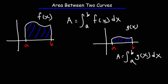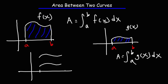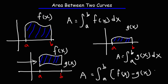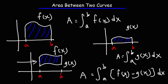Now what happens if we want to find the area between two curves? If we have both f of x and g of x, all we need to do is take the difference between the two areas. That area is simply the integral from a to b of f of x minus g of x dx. You take the difference between the top function and the bottom function, then take the definite integral of that difference.